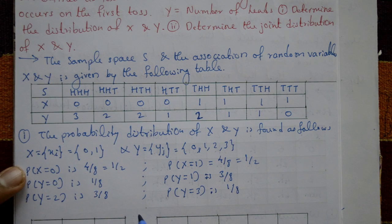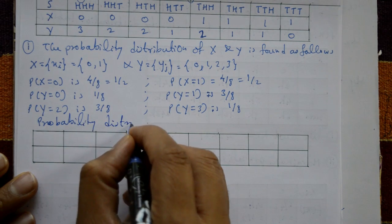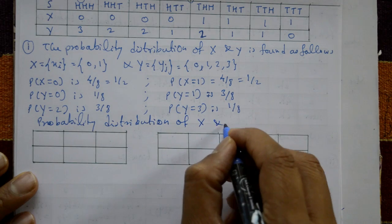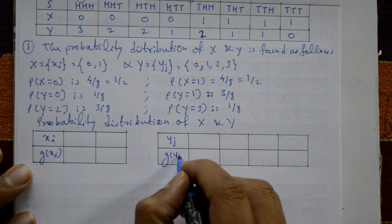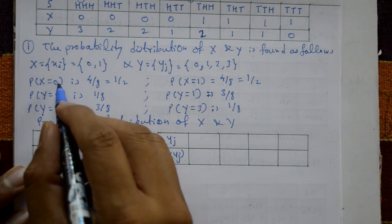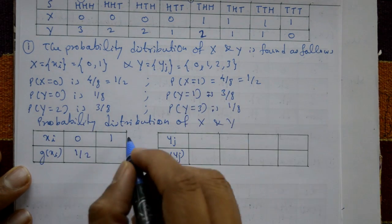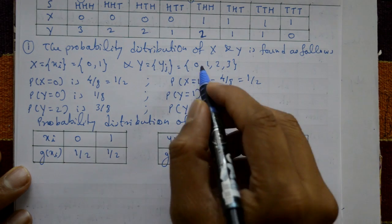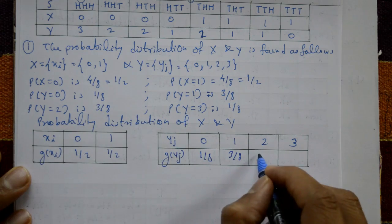Now the probability distribution of X and Y: X takes values 0 and 1, each with probability 1/2. Y takes values 0, 1, 2, 3 with probabilities 1/8, 3/8, 3/8, and 1/8 respectively.